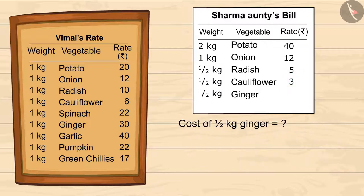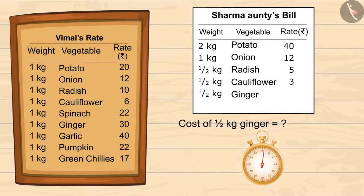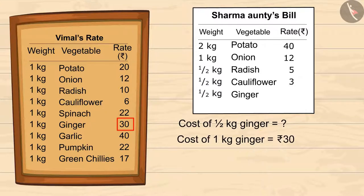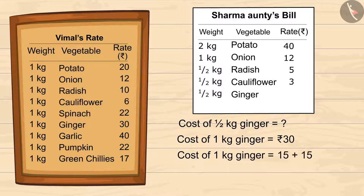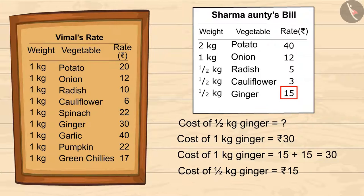Now we are left with half a kg of ginger, which means half the price of 1 kg. 1 kg of ginger costs 30 rupees, so half a kg of ginger will cost half of 30 rupees. On dividing 30 into two equal halves we get 15, so half a kg of ginger will cost 15 rupees.